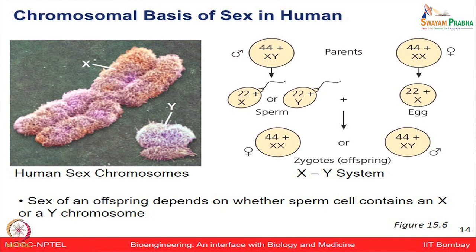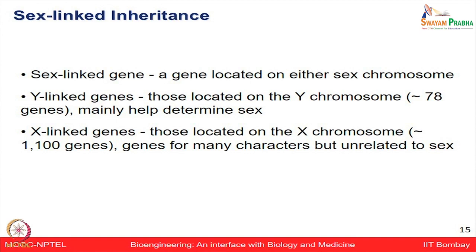The sex of a child depends on whether the sperm contains the X or the Y chromosome, because the egg will always carry only the X chromosome. There are many sex-linked genes found only on the X or Y chromosomes. Y-linked genes are actually much smaller in number — only around 78 genes have been found on the Y chromosome — whereas on the X chromosome almost 1,100 genes are present. So many properties are uniquely present on one or the other chromosome and follow that inheritance pattern.